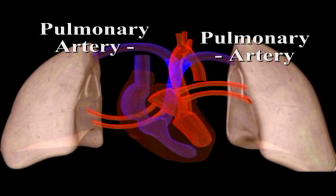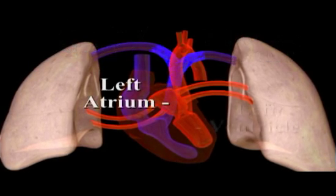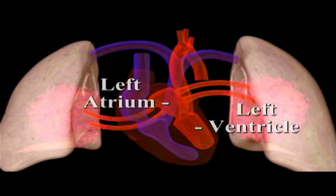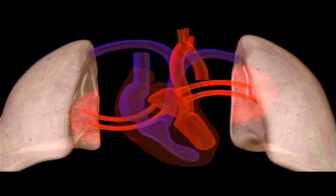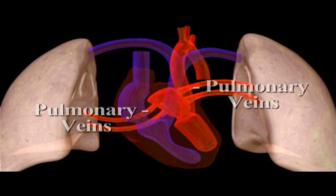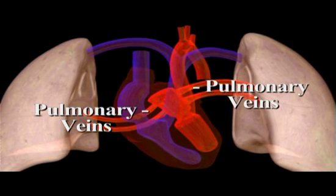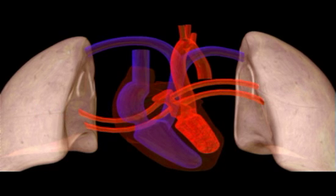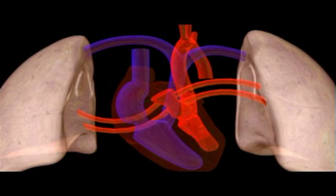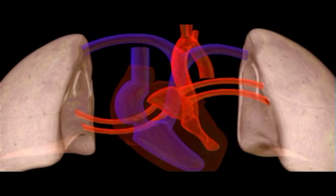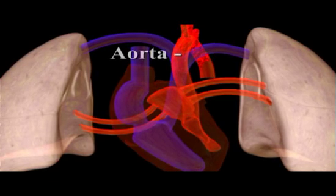The other pump, consisting of the left atrium and ventricle, powers circulation through the body. Newly oxygenated blood from the lungs enters the left atrium through pulmonary veins and is passed to the left ventricle. Strong contractions of the left ventricle — the heart's most muscular chamber — send oxygenated blood coursing throughout the aorta to the rest of the body.